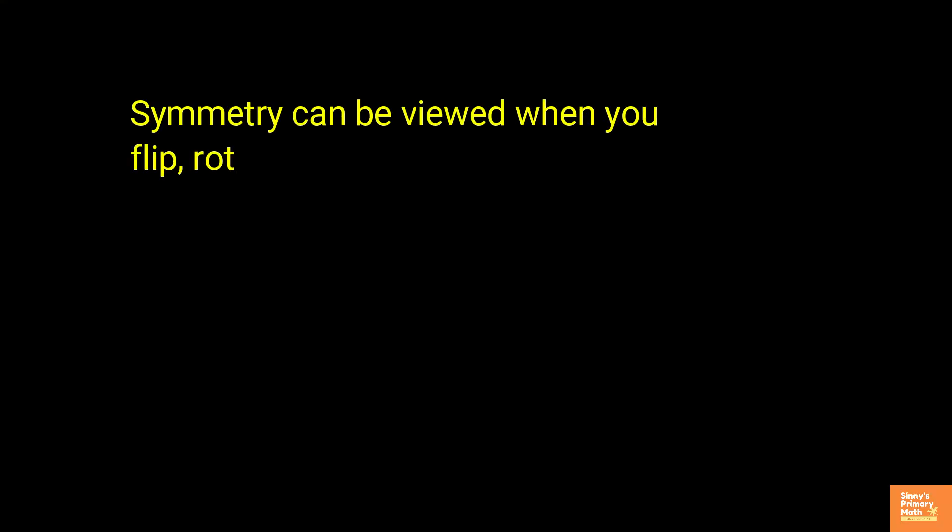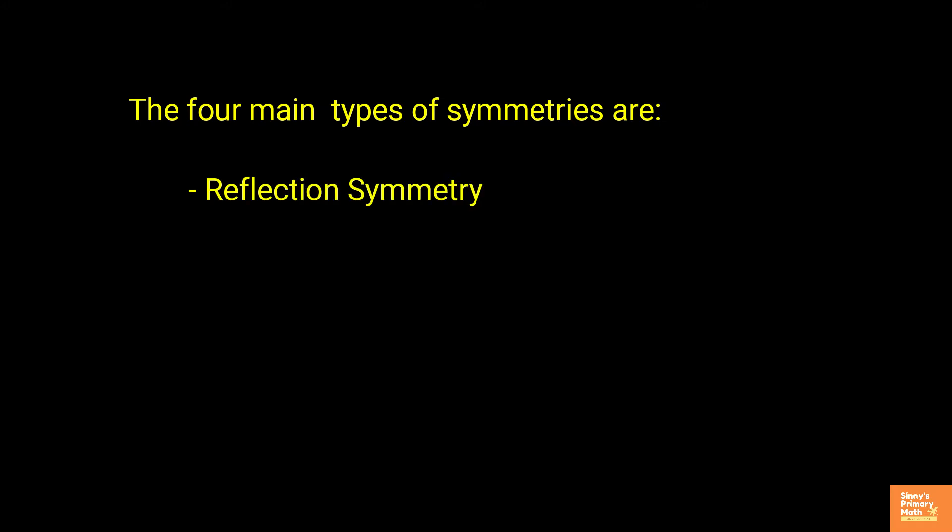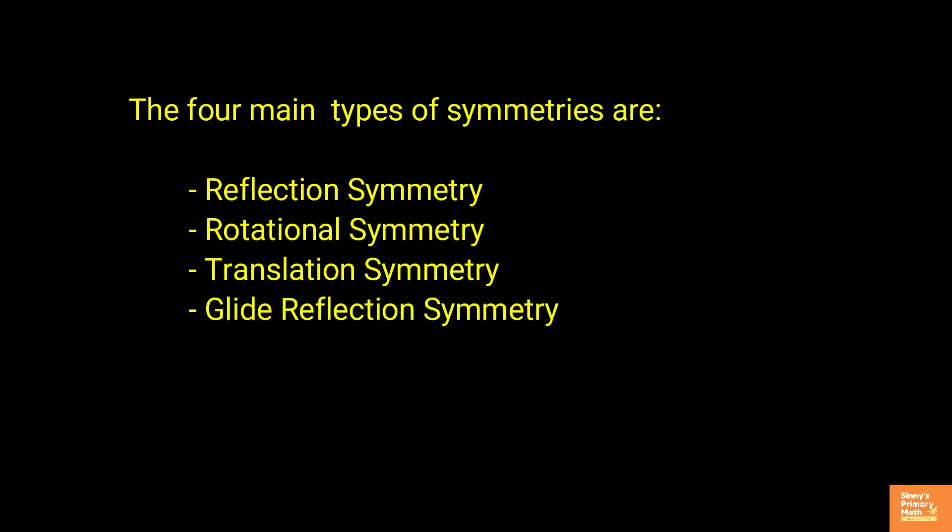Symmetry can be viewed when you flip, rotate or slide a shape. The four main types of symmetries are reflection symmetry, rotational symmetry, translation symmetry and glide reflection symmetry. These four types of symmetries are examples of different types of symmetry on a flat surface called planar symmetry.